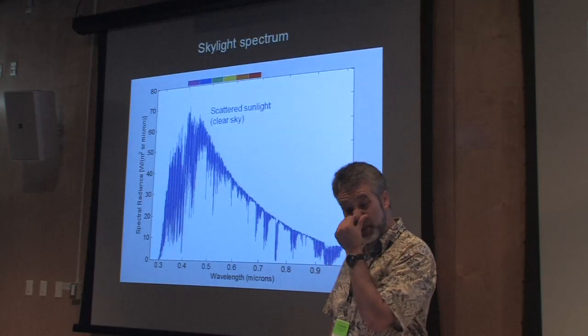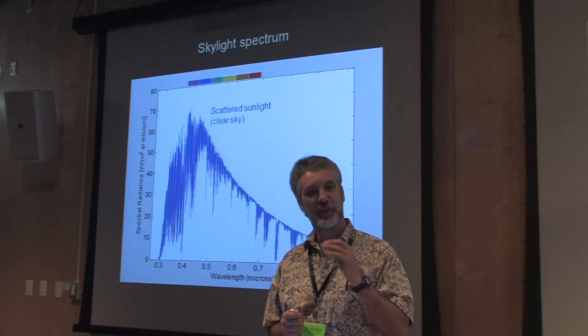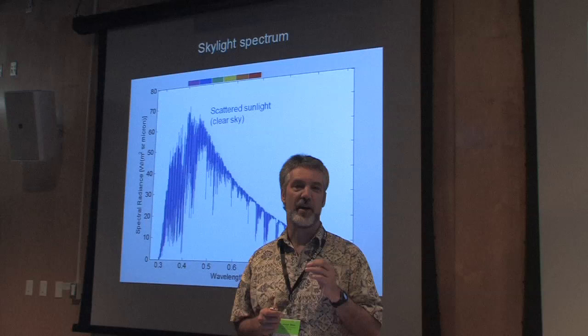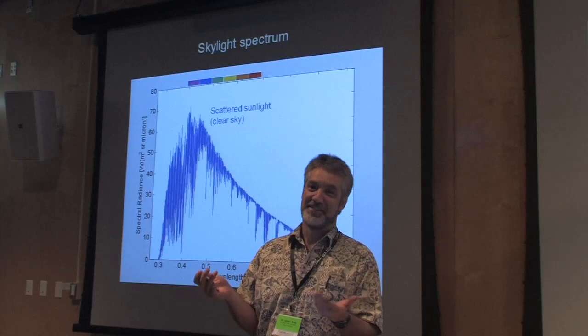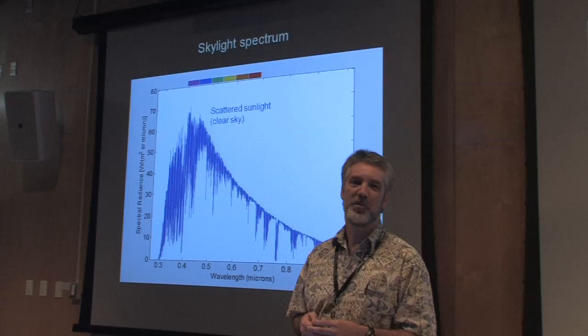But that leaves us with a mystery. According to what I just said, the sky should appear violet, because violet light scatters much more than red or even blue light. So why do we see blue instead of violet? I see blue when I look at the sky during the day.